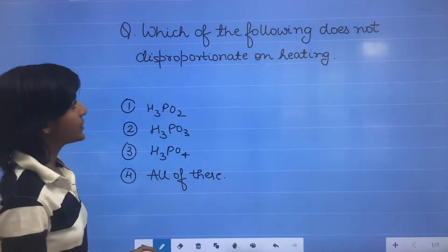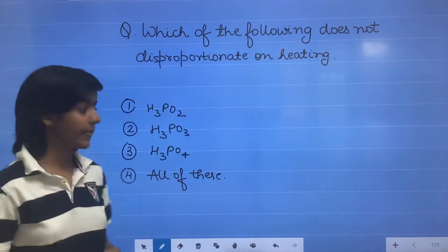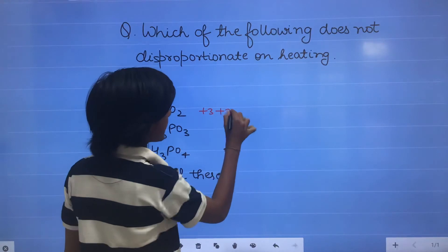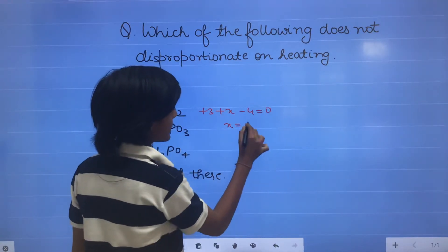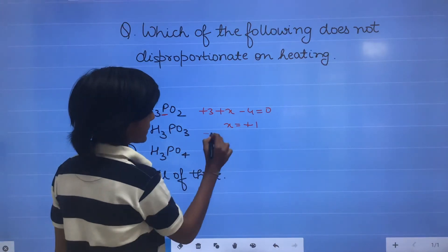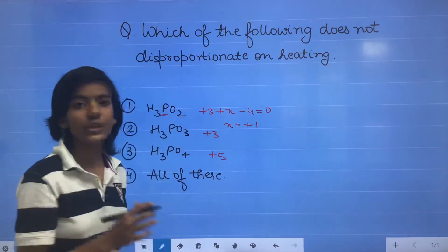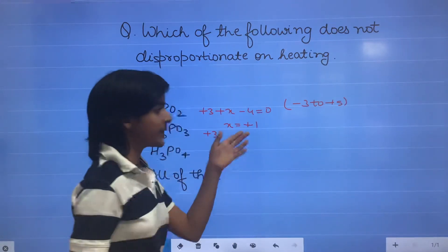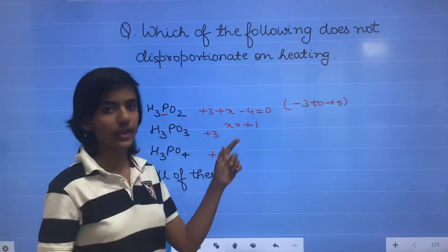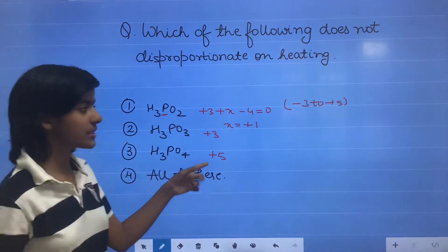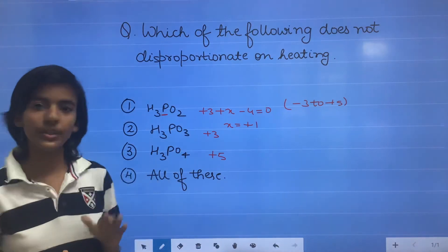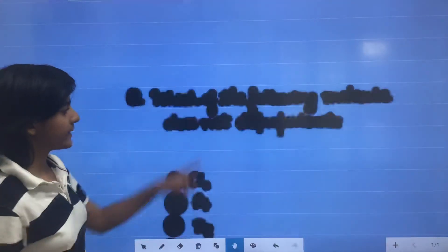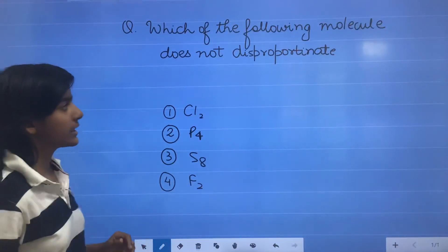Another question: which of the following does not disproportionate on heating? For phosphorus compounds — H3PO2 has oxidation state plus 1, H3PO3 is plus 3, and H3PO4 is plus 5. The variation of oxidation state in the nitrogen family is from minus 3 to plus 5. In H3PO4, P is at plus 5, so it can only be reduced, not oxidized. Therefore, H3PO4 does not undergo disproportionate reaction.